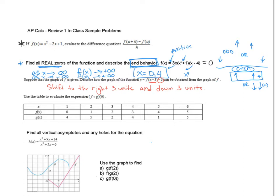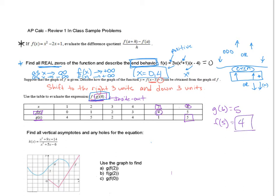Here we go with the next question: use the table to evaluate f of g of 6. We always go inside out — so I do g of 6 first. Looking at the table, at g(x) when x is 6, the value is 5. So step 2 is f of 5. Looking at f(x) when x is 5, that answer is 4. So the final answer is 4.